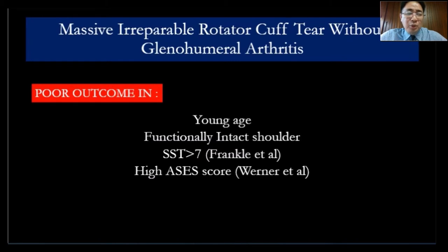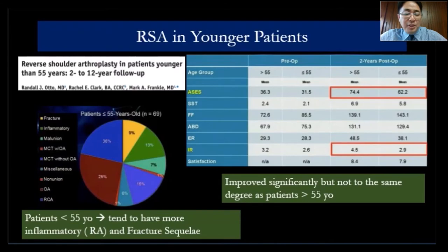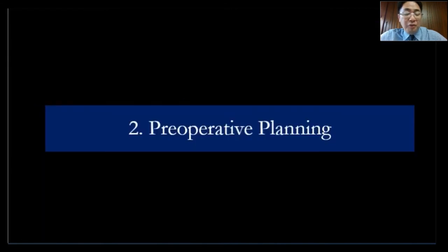You need to stick to the indications. Poor outcomes occur in young patients with good shoulder function, so try to avoid reverse in young patients. But sometimes we cannot avoid it, like with fracture sequelae or revision surgery. The shoulder scores are worse compared to patients older than 55.